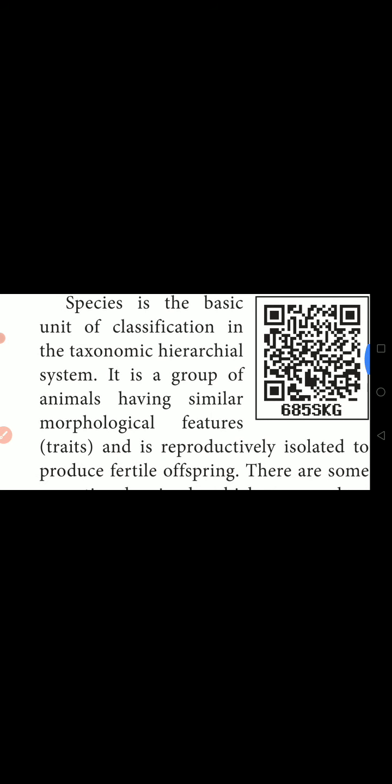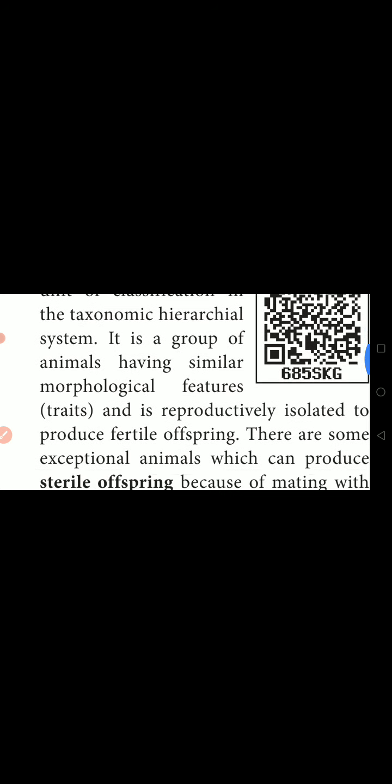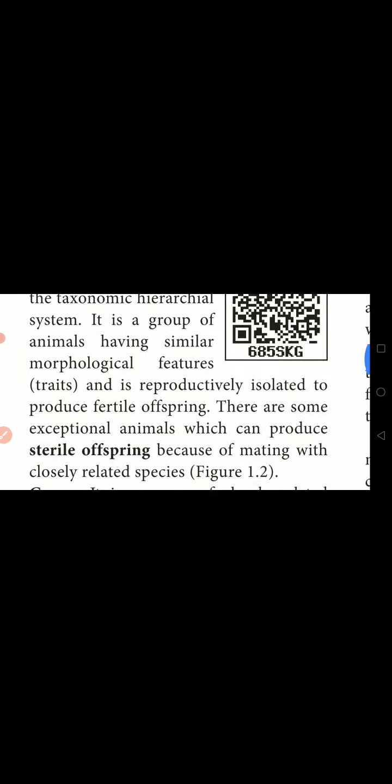Species is a group of animals having similar morphological features. Morphology means external features and external structures. Those organisms which have similar external characters and structures come under the same species. These traits are passed from generation to generation. They are reproductively isolated and can produce fertile offspring. Offspring means young ones.